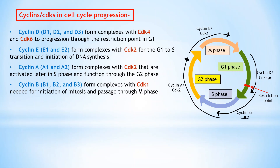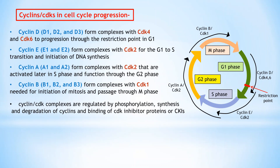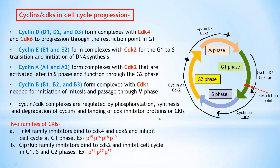Initiation of mitosis and passage through M phase are controlled by CDK1 in complexes with B-type cyclins — B1, B2, and B3 — also called maturation promoting factor or MPF. Activation of these cyclin-CDK complexes is regulated by phosphorylation as well as synthesis and degradation of the cyclin proteins. These complexes are also regulated by the binding of CDK inhibitor proteins or CKIs. There are two families: the INK4 family inhibitors, which bind to CDK4 and CDK6 and inhibit cell cycle progression at G1 phase only, and the CIP/KIP family inhibitors, which bind to CDK2 and inhibit the cell cycle in G1, S, and G2 phases.